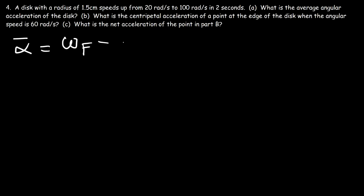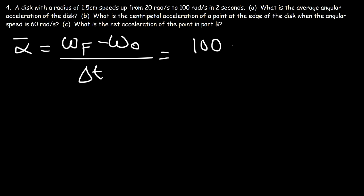Number 4: A disk with a radius of 1.5 centimeters speeds up from 20 radians per second to 100 radians per second in 2 seconds. What is the average angular acceleration? Using the change in angular velocity divided by change in time: 100 minus 20 is 80, divided by 2 seconds, gives us 40 radians per second squared.